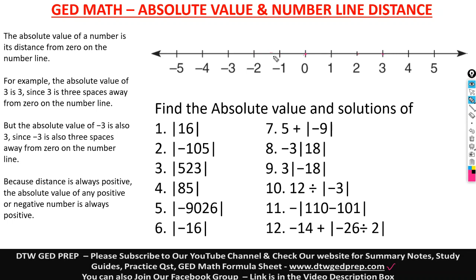Since distance is always positive — for instance, from your home to Walmart is one mile, that's positive. When you're coming back from Walmart to home, you're supposed to say it's negative, but distance can't be negative. It's always positive. So the absolute value of any positive or negative number is always positive.